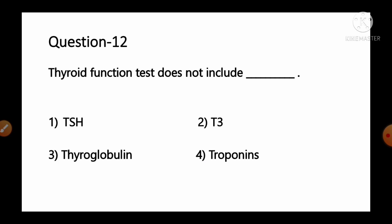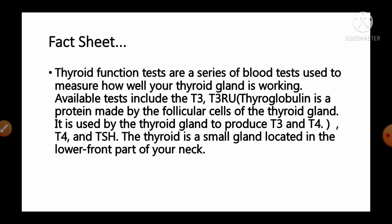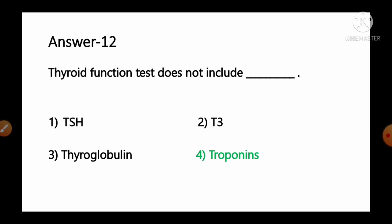Question number 12: Thyroid function test does not include — options: 1) TSH, 2) T3, 3) thyroglobulin, 4) troponins. Thyroid function tests are blood tests measuring how well the thyroid gland is working. They include T3, T4, TSH, and thyroglobulin — a protein made by follicular cells used to produce T3 and T4. Troponin is not included in thyroid function tests. So option number 4 is the correct answer.